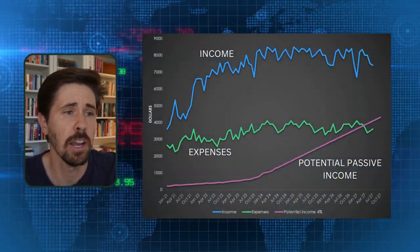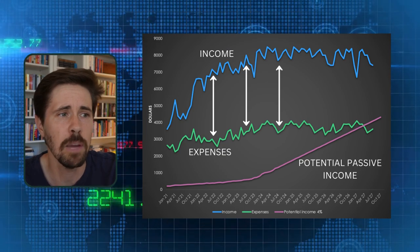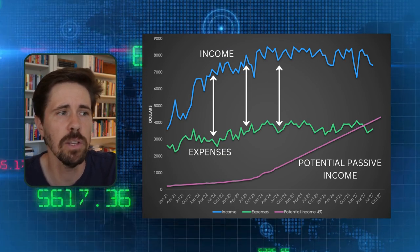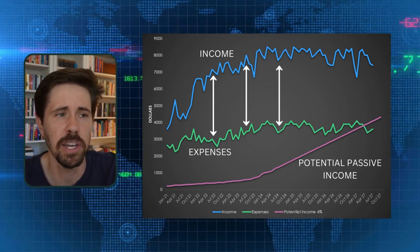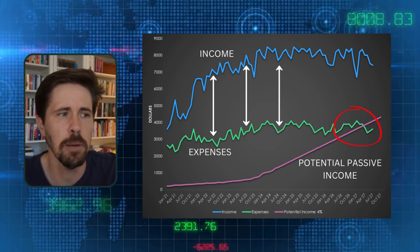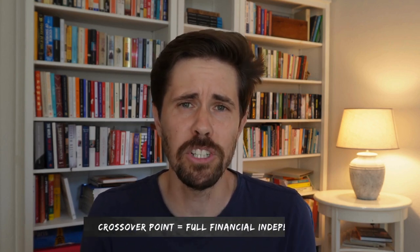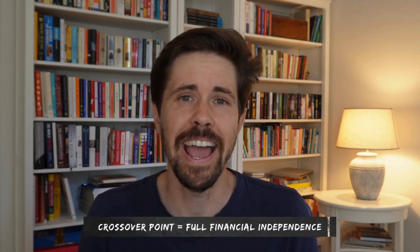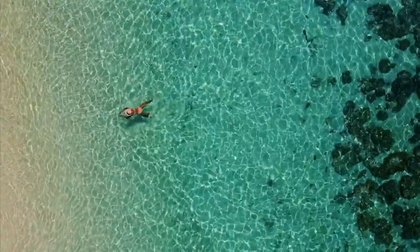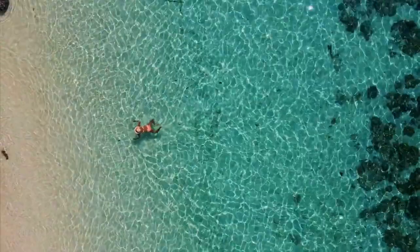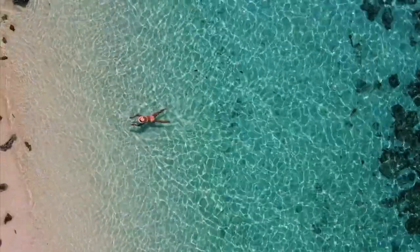Over time, if you manage to keep a reasonable savings rate — in other words, a good distance in the chart between your income and your expenses — your investments will start to slowly grow and compound until finally the purple line representing your potential passive income has caught up with the green line representing your expenses. And this is the magical crossover point. At this point you've reached full financial independence, and your portfolio of income-generating assets could produce sufficient monthly income to sustain your lifestyle without depending on paid employment.